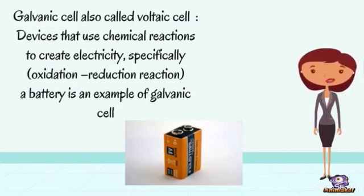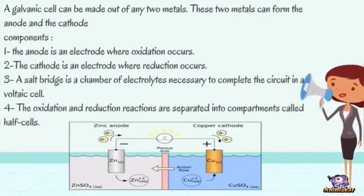A galvanic cell can be made out of any two metals. These two metals can form the anode and the cathode. Component one: the anode is an electrode where oxidation occurs. Component two: the cathode is an electrode where reduction occurs.